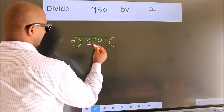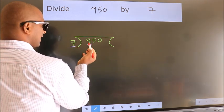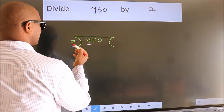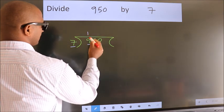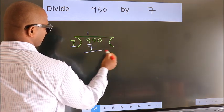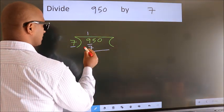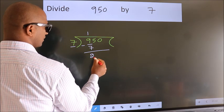Here we have 9, here 7. A number close to 9 in 7 table is 7 once 7. Now we should subtract, we get 2.